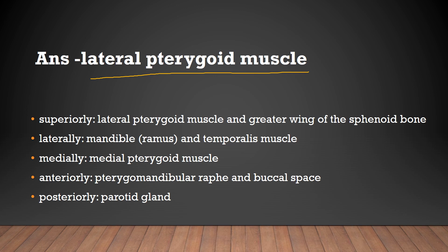The boundaries of pterygomandibular space: superiorly — lateral pterygoid muscle and greater wing of sphenoid bone; laterally — ramus of the mandible and temporalis muscle; medially — medial pterygoid muscle; anteriorly — pterygomandibular raphe and buccal space; posteriorly — parotid gland.